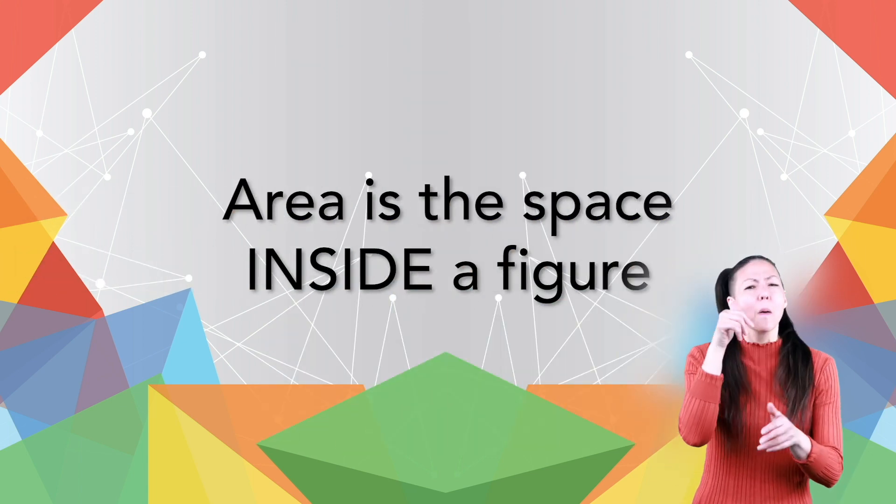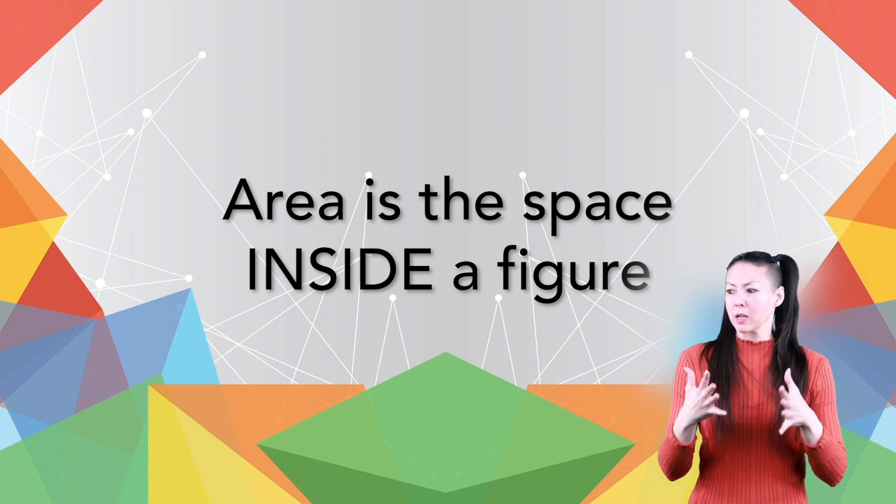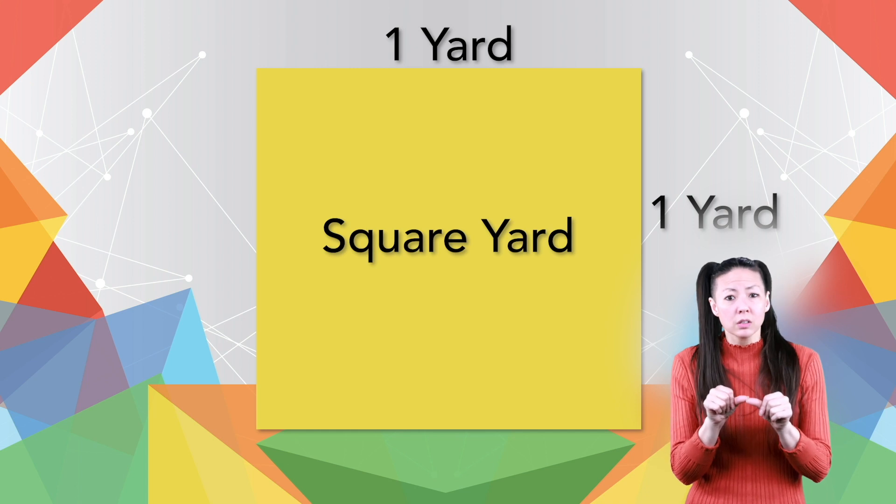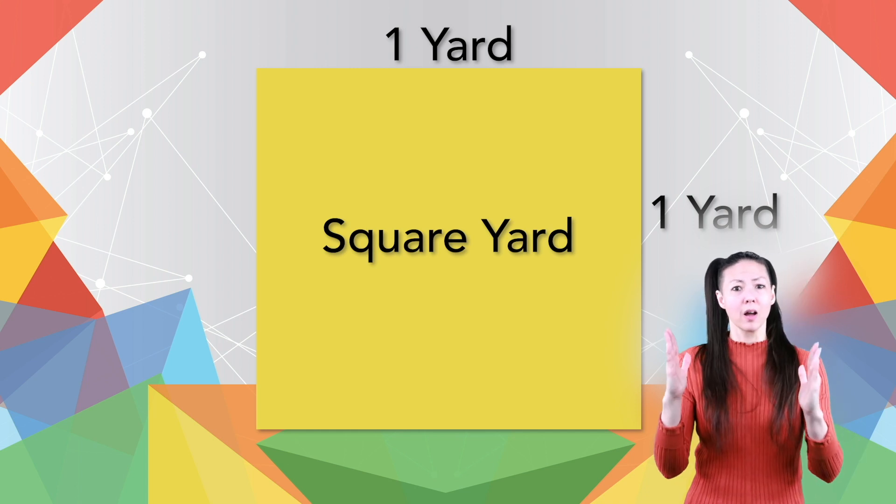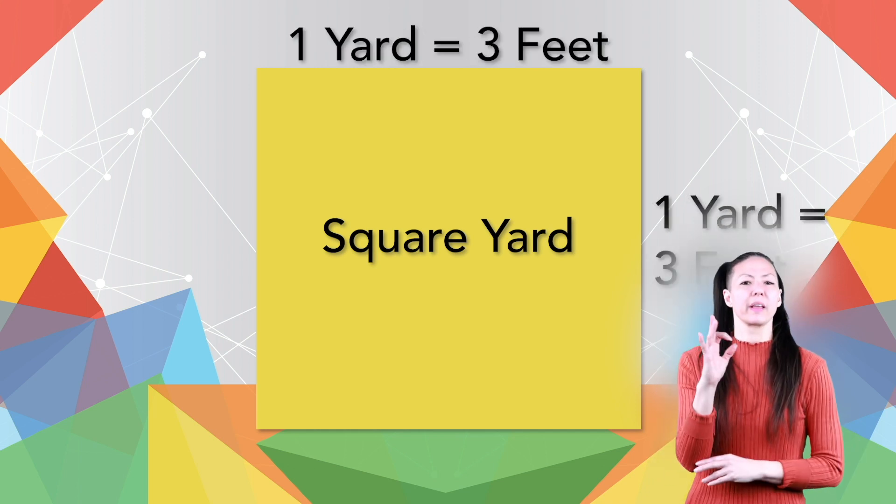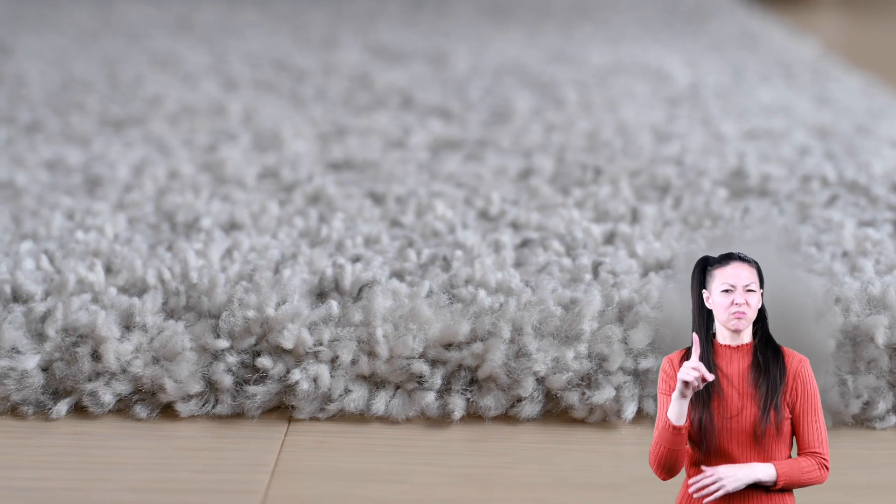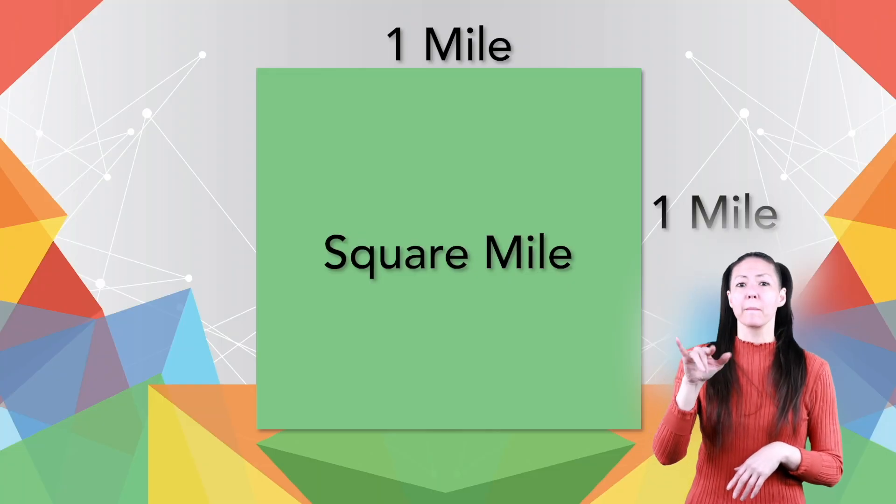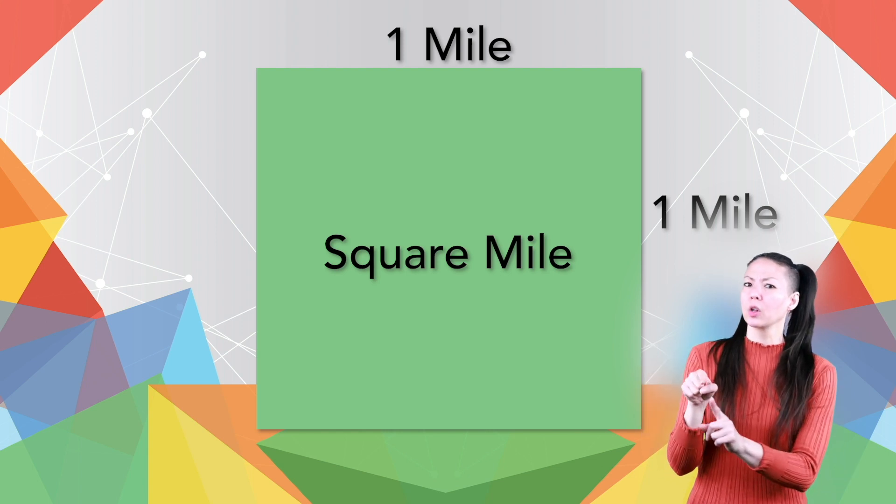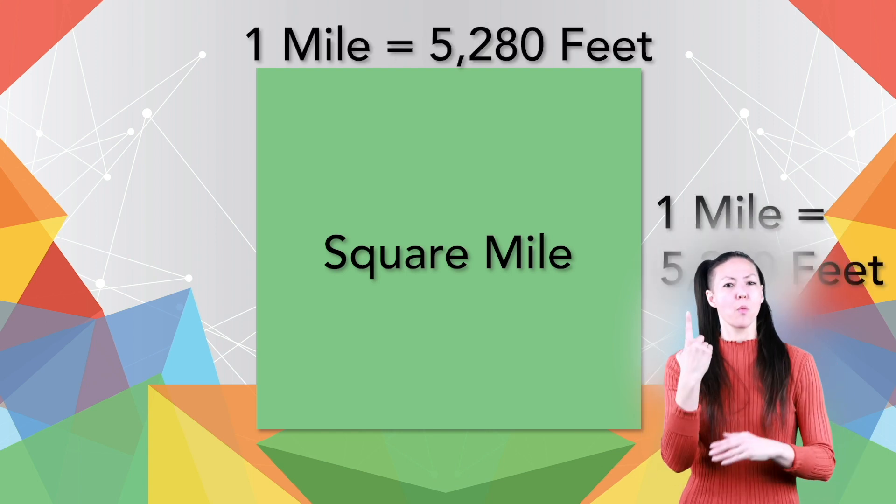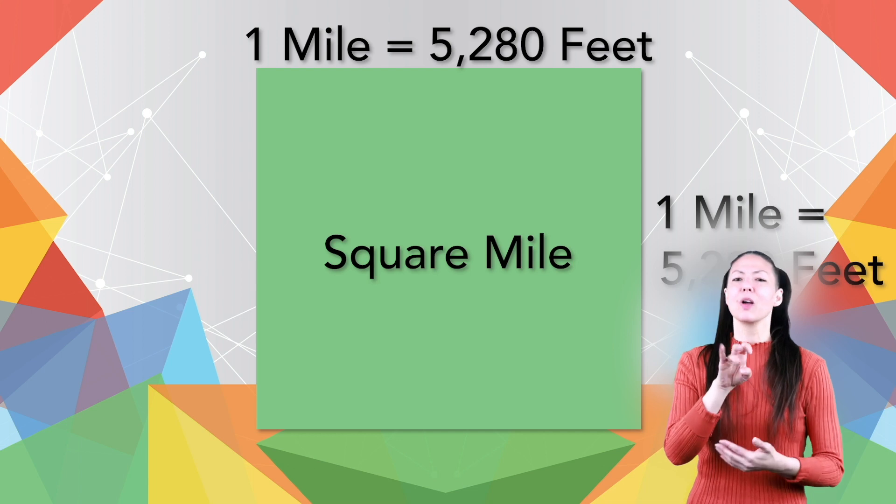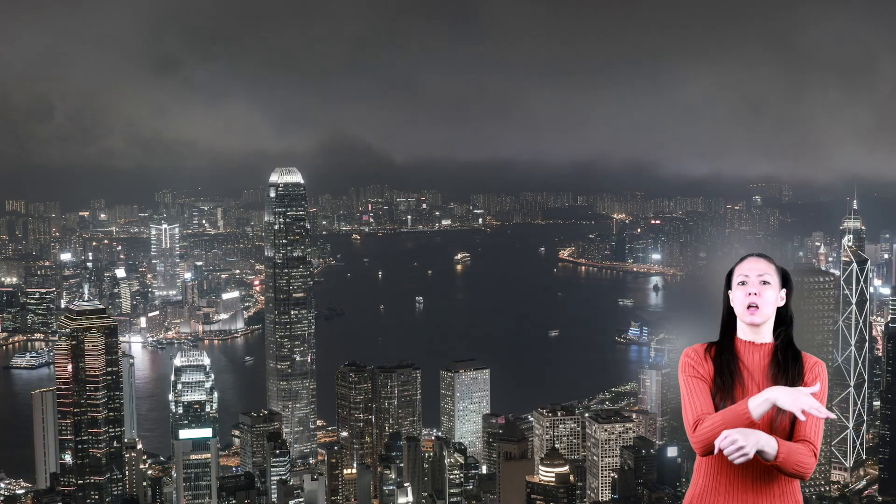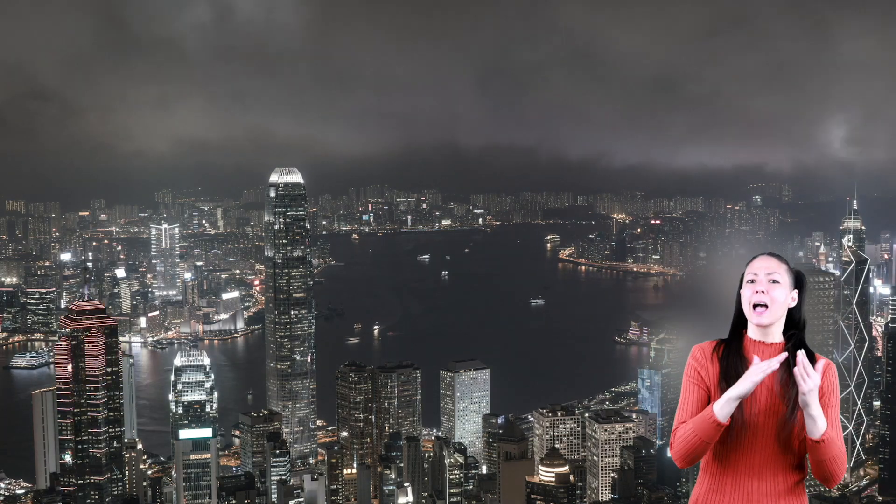One square yard has a length and width of one yard, which is three feet. Square yards are sometimes used to measure the area of carpeting. A square mile is much bigger, with a length and width of one mile or five thousand two hundred and eighty feet. Square miles are used to measure the areas of large spaces like towns and cities or oceans and lakes.